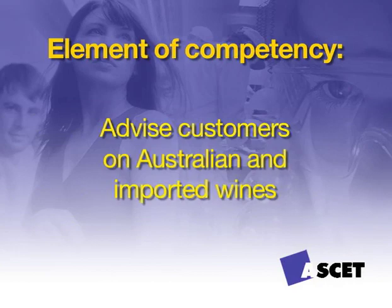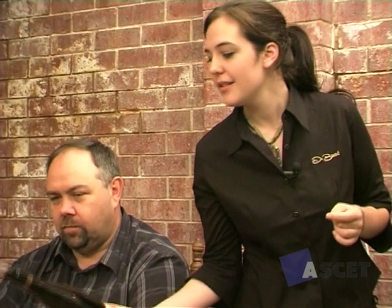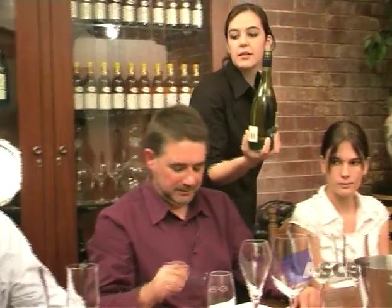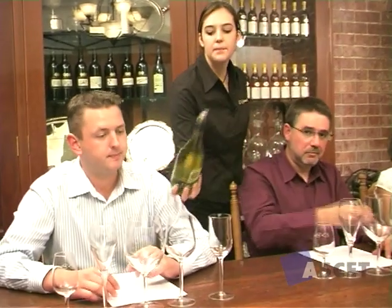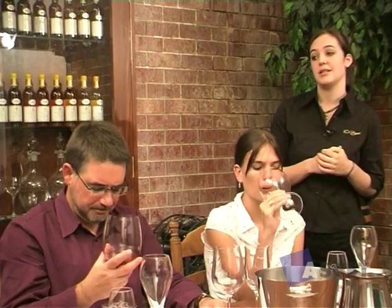Advising customers on Australian and imported wines. When working in the hospitality industry, it's important that you have extensive knowledge of the wines available at your venue so that you can assist customers with their choice. The level of assistance can range from naming the house white, to giving a detailed description of the taste, colour and texture of a wine, to recommending a style of wine to accompany a particular meal.